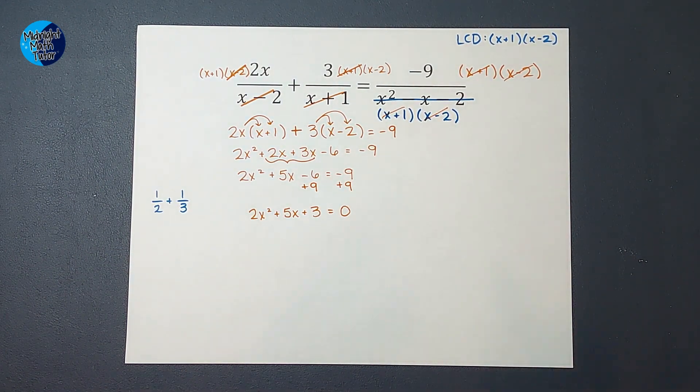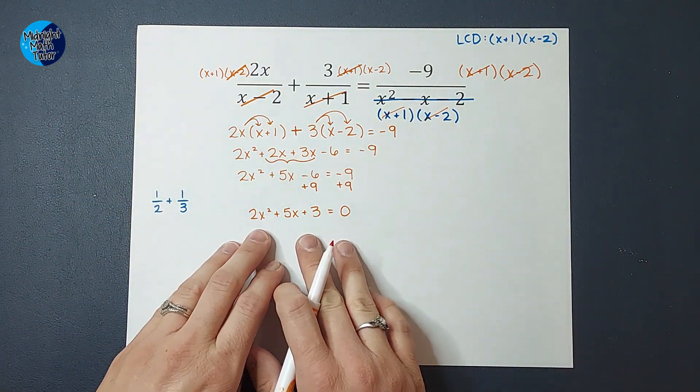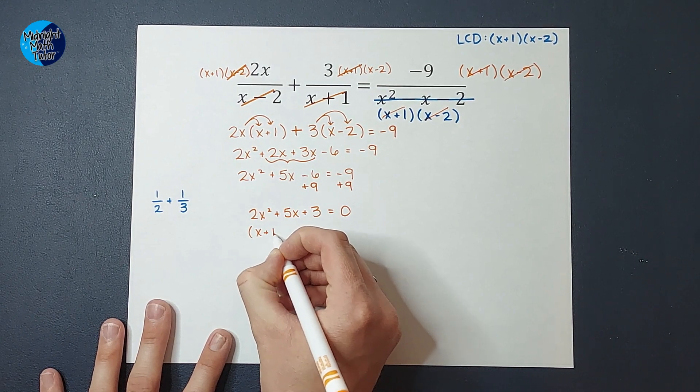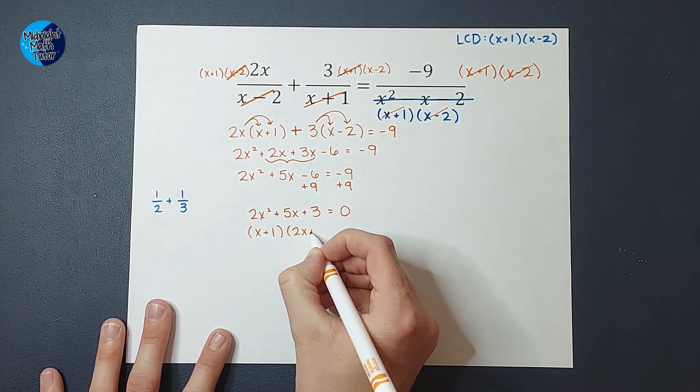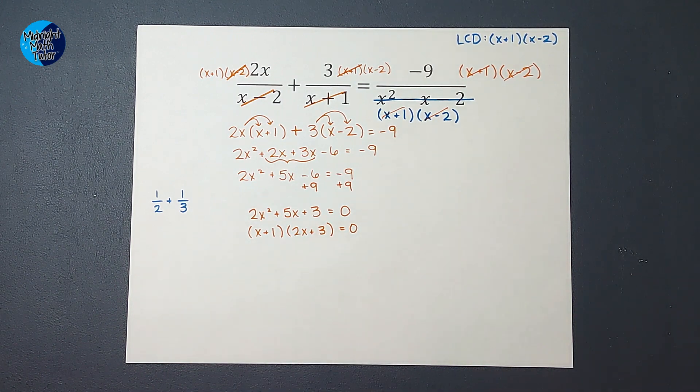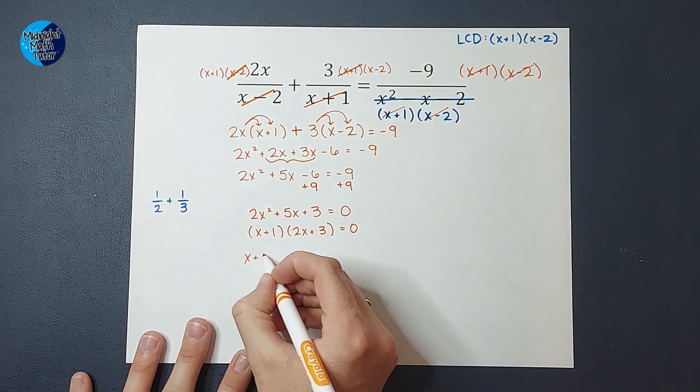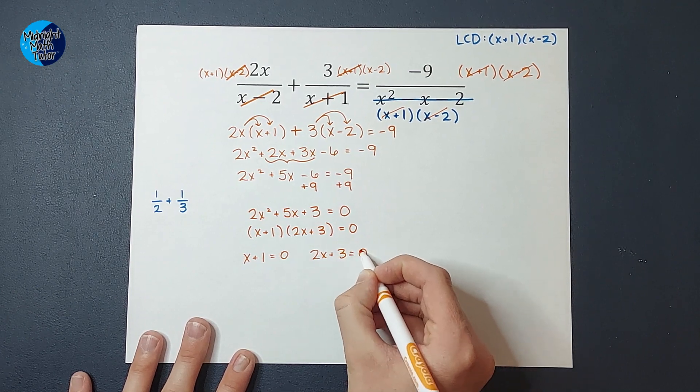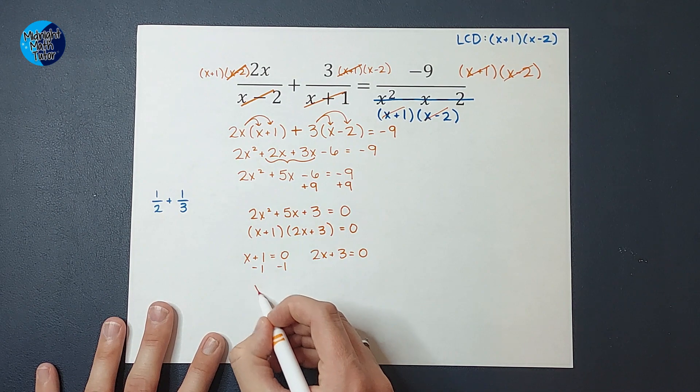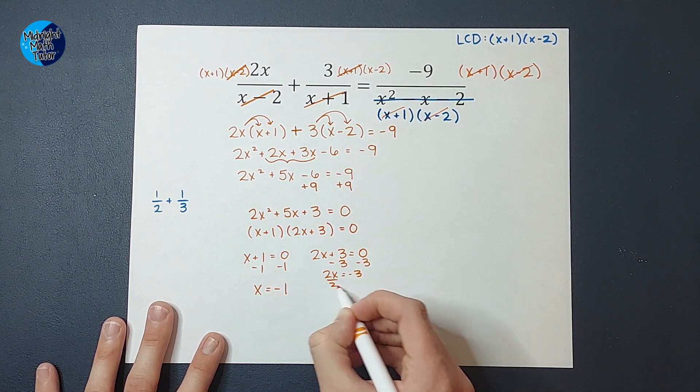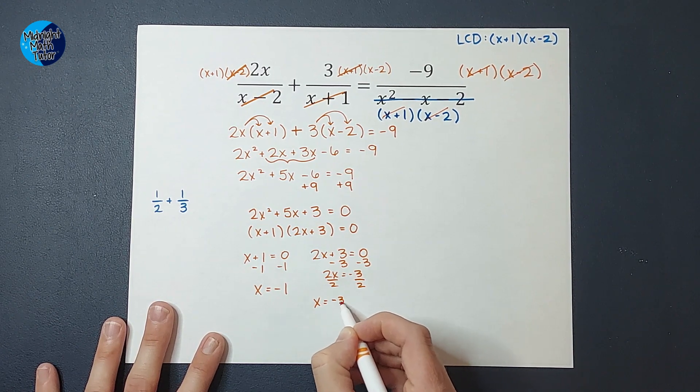So what I'm going to do is try to get everything to one side and then see if I can factor that. So I'm going to add 9 to both sides and I end up with 2x squared plus 5x plus 3 equals 0, which is what we wanted. Now I'm going to see if I can factor this. I'm just going to tell you what the factoring is. If you need a reminder on how to factor this, I'll link a video in the corner. But when I factor this, I get x plus 1 times 2x plus 3, and we're still equal to 0. So now I can set each of these equal to 0. So I'm going to have x plus 1 equals 0 and 2x plus 3 equals 0. So then when I solve this guy, subtract 1 from both sides, I get x equals negative 1 and then this guy, subtract 3 and then I divide by 2 and I end up with x equals negative 3 halves.